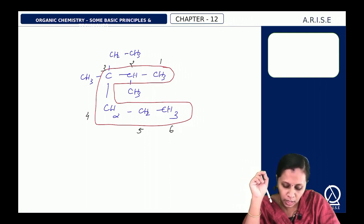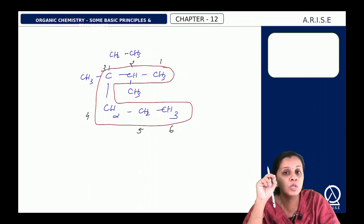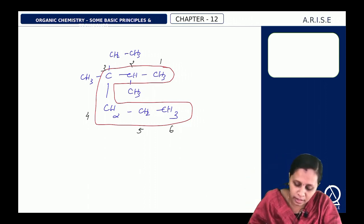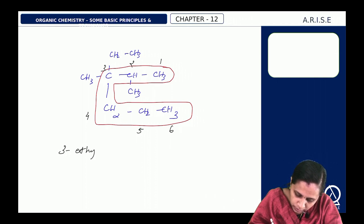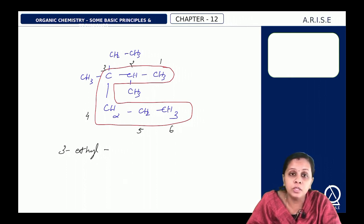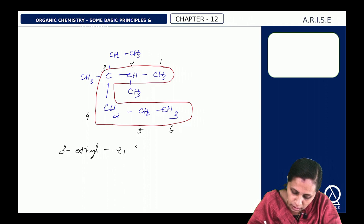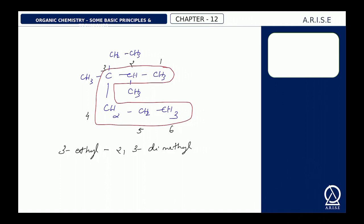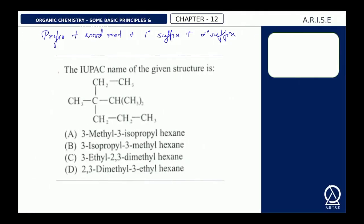The prefix indicates substituents written in alphabetical order. Ethyl comes first, so it is 3-ethyl. There are 2 methyl groups, so use the prefix 'di', giving 2,3-dimethyl. There are 6 carbon atoms in the longest chain, so the word root is 'hex'. Since all carbon-carbon bonds are single bonds, the primary suffix is 'ane'. There is no secondary suffix as there is no functional group. The name is 3-ethyl-2,3-dimethylhexane, which is option C.